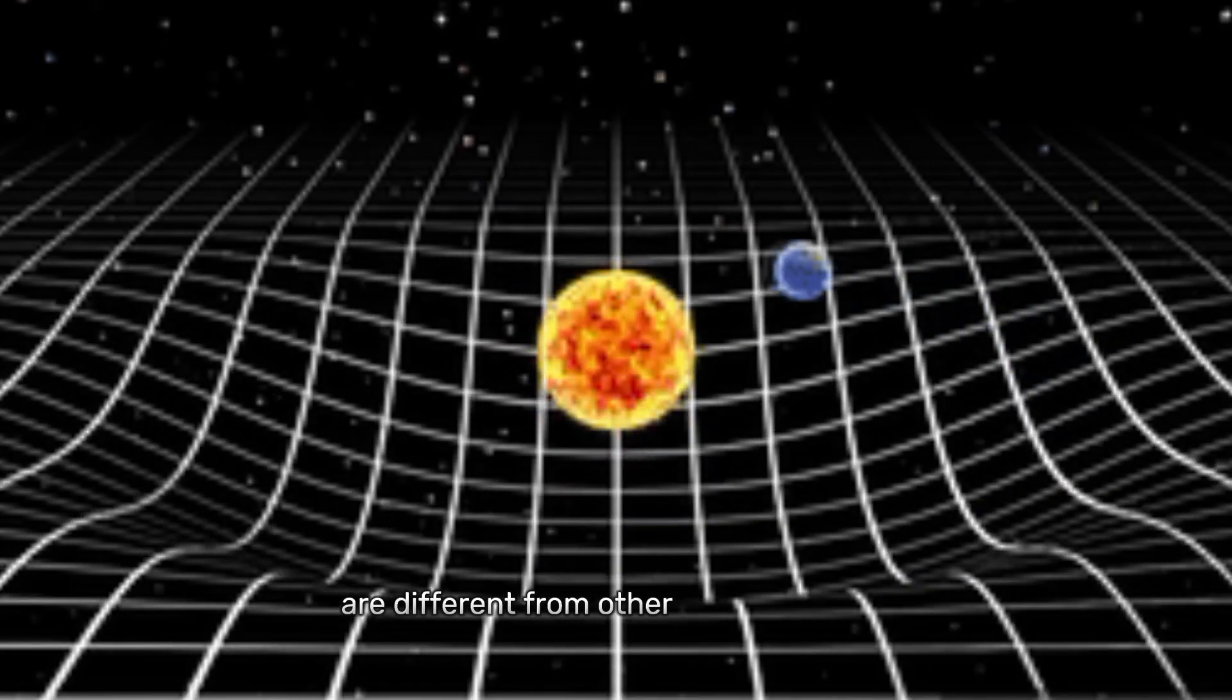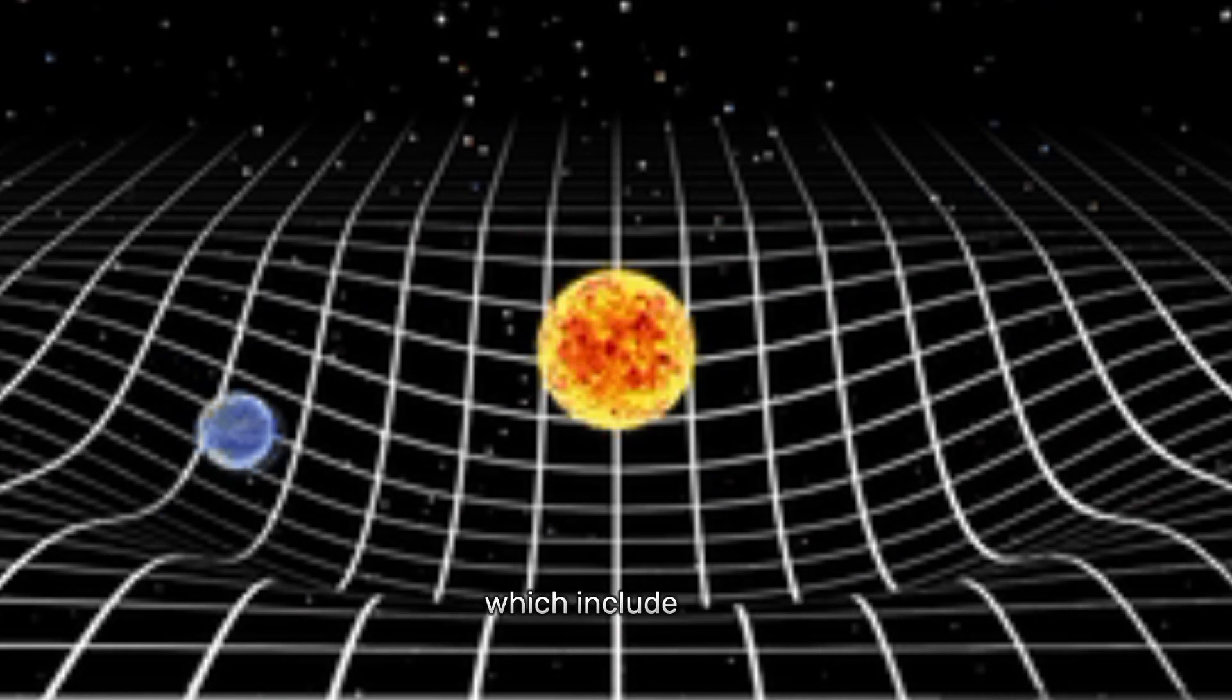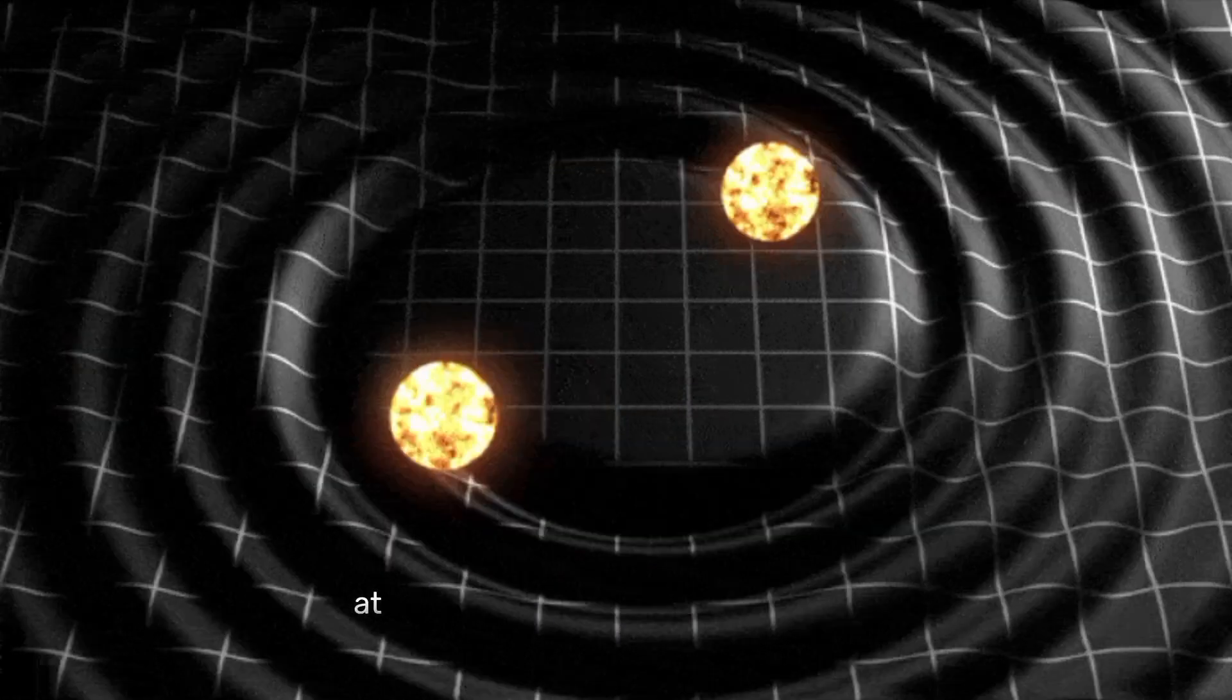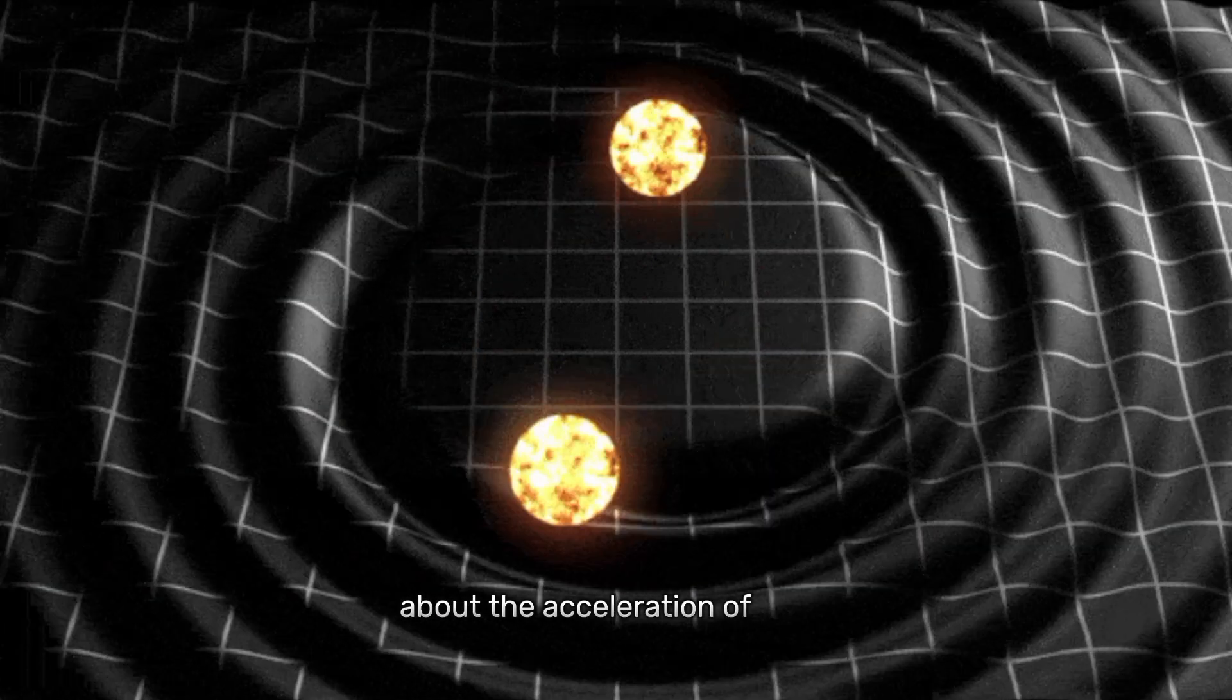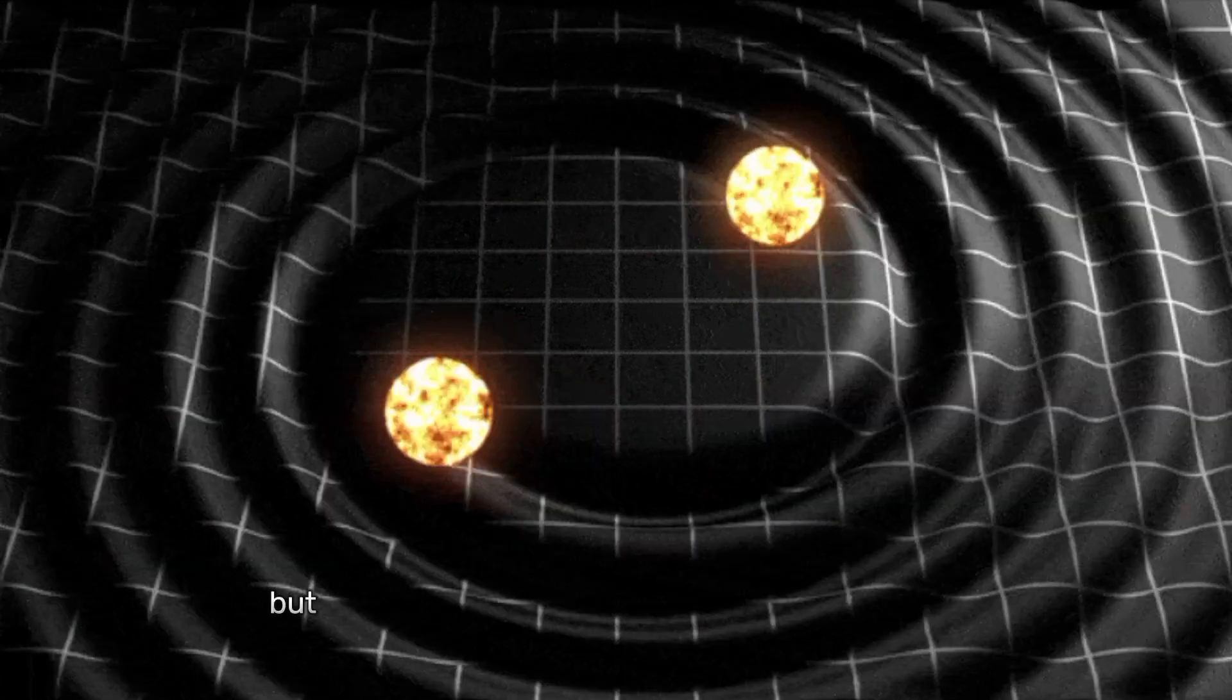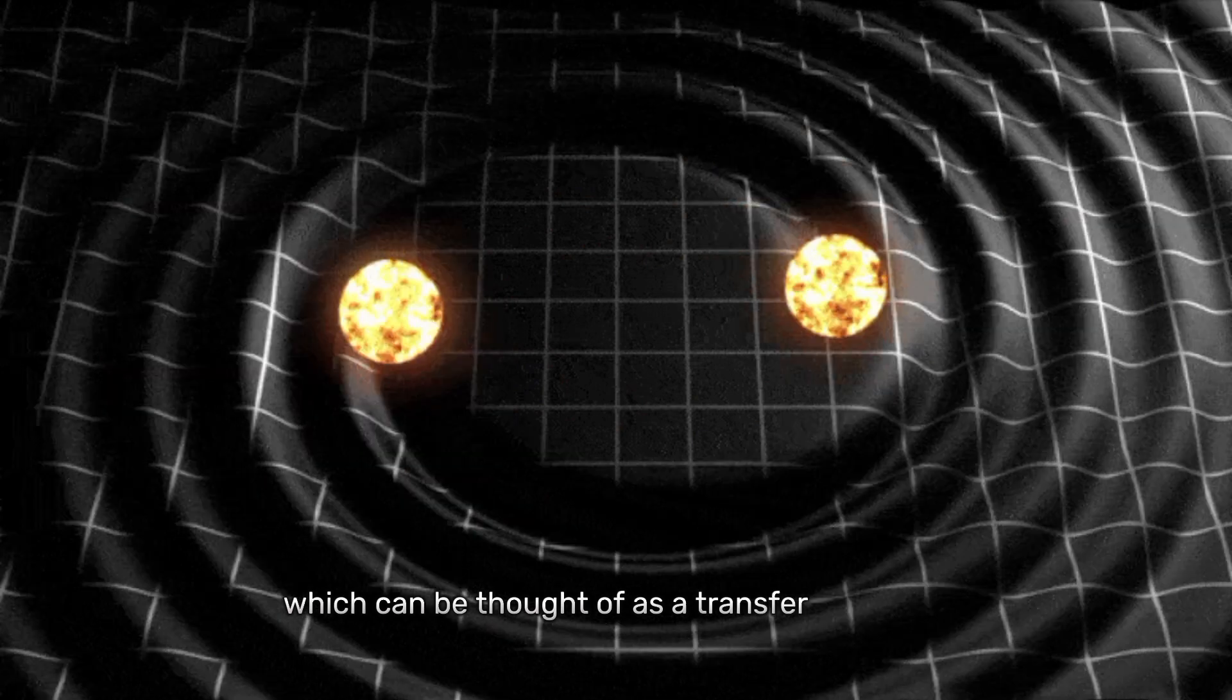Gravitational waves are different from other types of waves such as electromagnetic waves, which include light, radio waves, and X-rays. Electromagnetic waves travel through the universe at the speed of light and carry energy, while gravitational waves carry information about the acceleration of mass. The waves themselves do not carry energy, but they do change the distance between objects, which can be thought of as a transfer of energy.